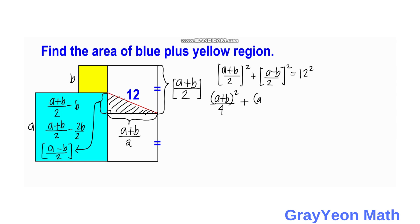Then this would be A minus B squared over 4 equals 144. Then we simply multiply this by 4. A plus B squared plus A minus B squared equals 144 times 4, which is equal to 576.